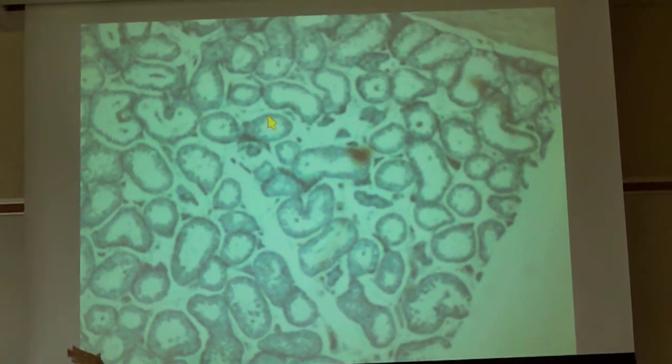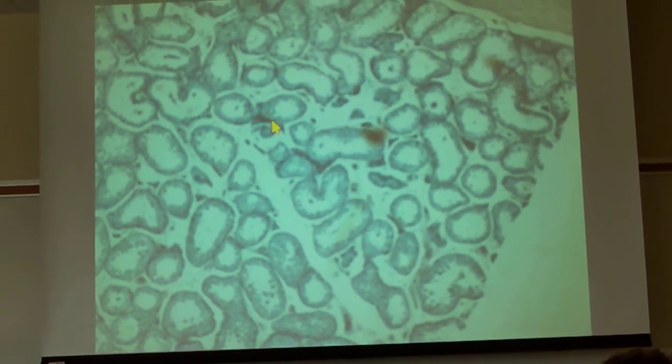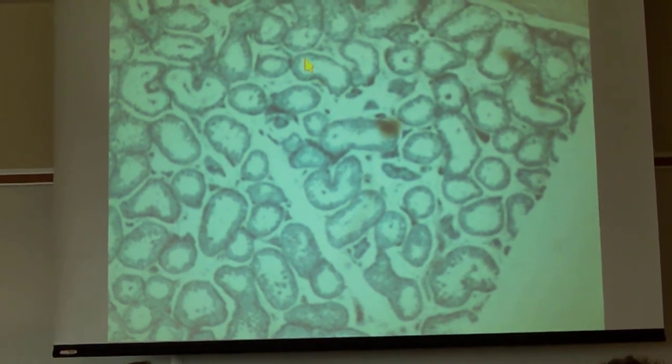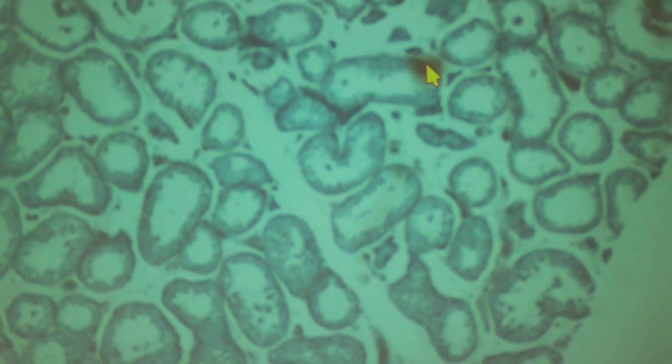So if we were to cross-section them, not of spaghettis, this is what we would be seen. So each of these little circles represents a cross-section of one of the spaghettis. So these are the seminiferous tubules. It's all cross-section now.